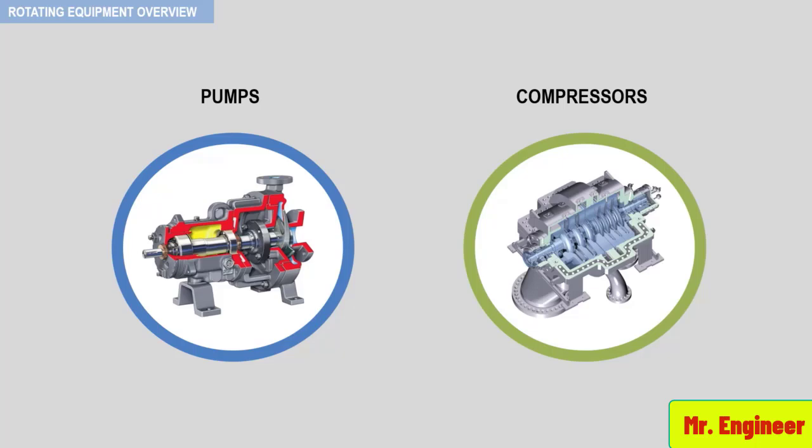The principles of dynamic machines apply both to pumps and compressors. However, since gases are compressible, the volume flow rate, and hence the gas velocity in a passage, is affected.